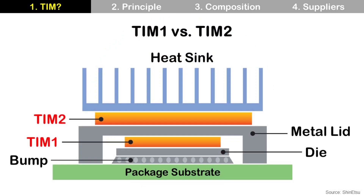In an electronic product, there is also TIM2. A heatsink is placed on top of the metal lid. So TIM1 means the TIM between the die and the metal lid in a semiconductor package. And TIM2 means the TIM between the metal lid and the heatsink in an electronic product like a desktop computer. If someone just says TIM in semiconductor packaging, it probably means TIM1.